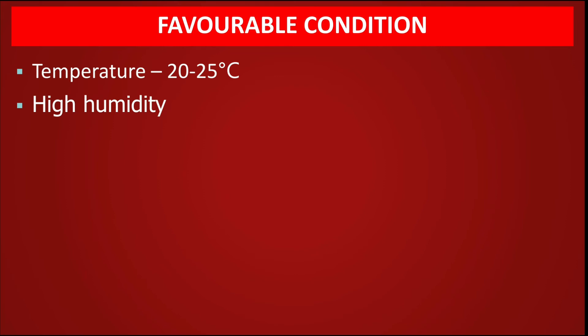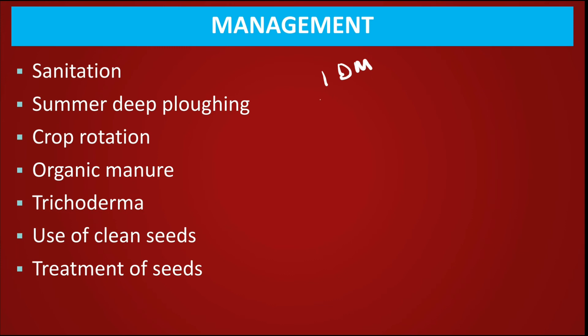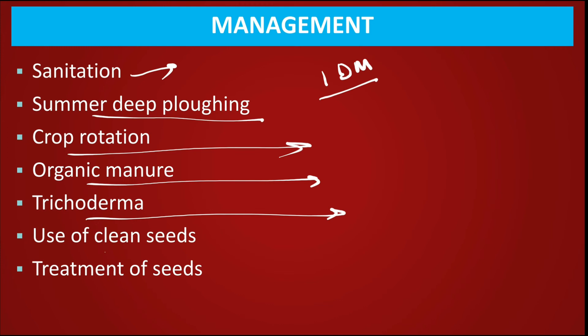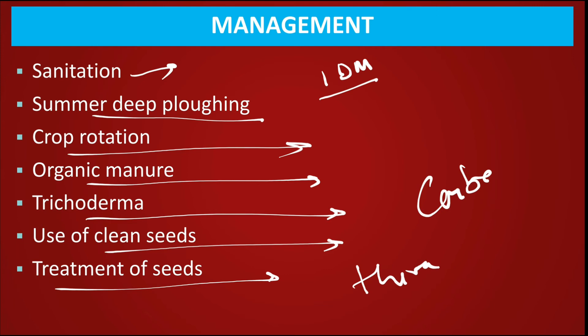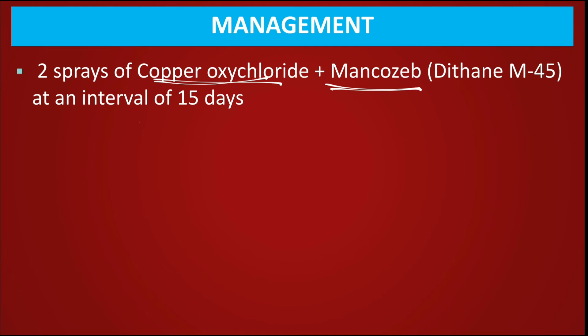For management, adopt integrated disease management practices: sanitation of the field, summer deep ploughing, crop rotation with non-host, application of organic manure, use of Trichoderma, use of clean/certified seeds, and seed treatment with chemicals like thiram or carbendazim. Spray copper oxychloride and mancozeb at 15-day intervals.